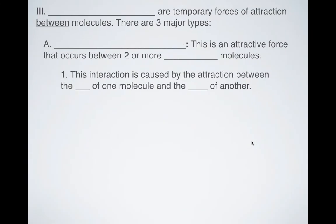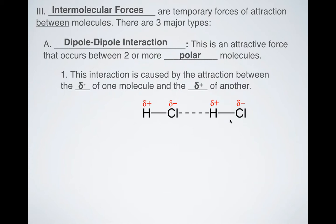Intermolecular forces are temporary forces. These are not bonds like covalent or ionic bonds. They are forces of attraction, think of them like magnets, that are going to temporarily attract positives or negatives, or partial positives and partial negatives. So there are three major types. The first is called a dipole-dipole interaction. This is an attractive force that occurs between two or more polar molecules. So generally speaking, if you have polar molecules, you're going to have dipole-dipole interactions. Now this interaction is caused by that difference in electronegativity.